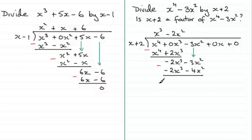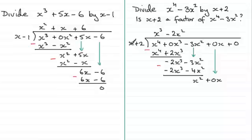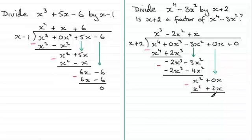Subtracting again: we get 0 for the x cubed terms, and minus 3x squared minus minus 4x squared gives x squared. Bring down the next term, which is 0x, so we write plus 0x. What do we multiply x by to get x squared? That's going to be x. x times x plus 2 gives x squared plus 2x. Subtracting: the x squared terms cancel, and 0x minus plus 2x gives minus 2x. Bring down the last term, plus 0.